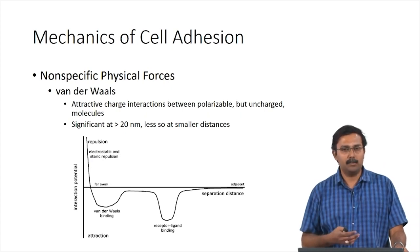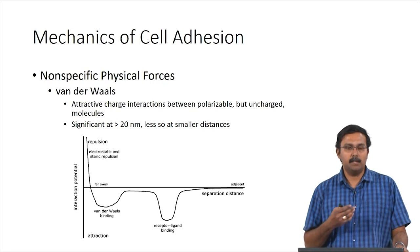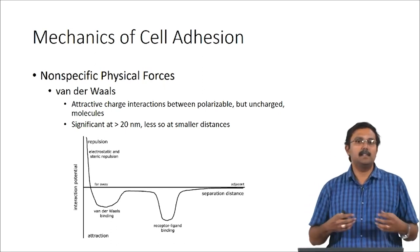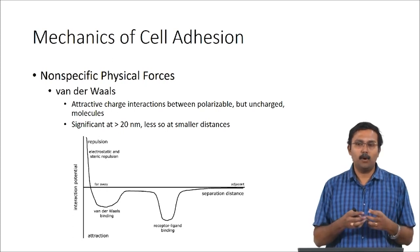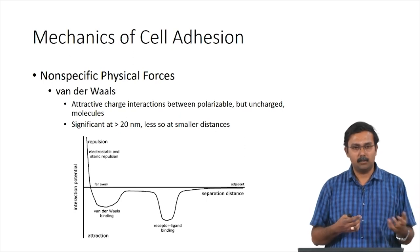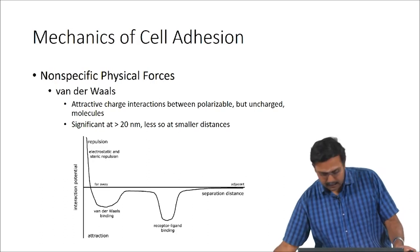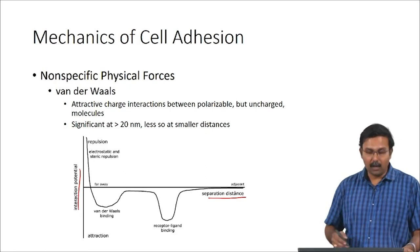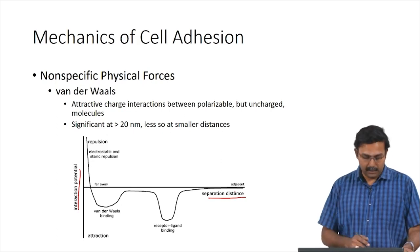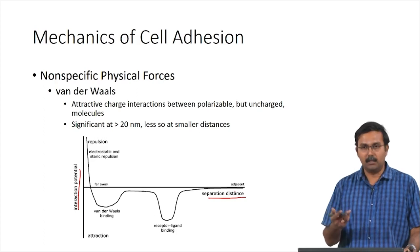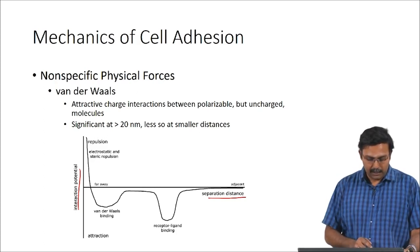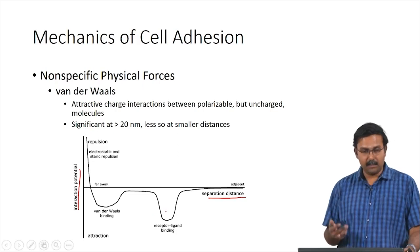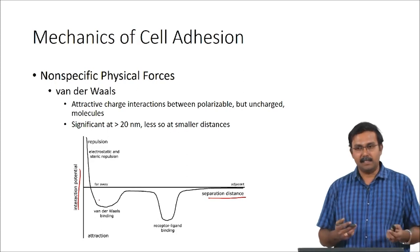The last non-specific physical force is van der Waals forces — attractive charge interactions between polarizable but uncharged molecules. This is significant when the distance is greater than 20 nanometers, and less important when very close because other factors play a bigger role. The graph shown here — interaction potential versus separation distance — shows the cumulative effect of all three non-specific physical forces. Electrostatic and steric repulsions are seen when cells are farther away, and receptor-ligand binding has a significant impact while van der Waals binding has a lesser impact.